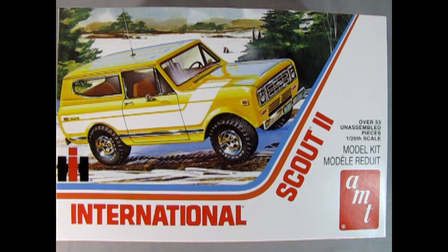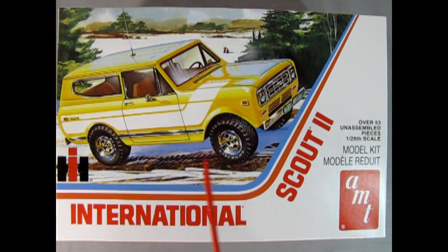All right, so here we have our AMT International Scout 2. Now this model kit originally came out by Ertl. It was one of the Ertl model kits, and then AMT or Ertl bought AMT. There was a merger there and then through time of course round two bought AMT Ertl. Ertl also had an MPC in there, but at any rate now, it's just AMT under round two. International Harvester was a tractor company that branched out into building small utility vehicles from 1976 until 1980, well at least for the Scout 2.